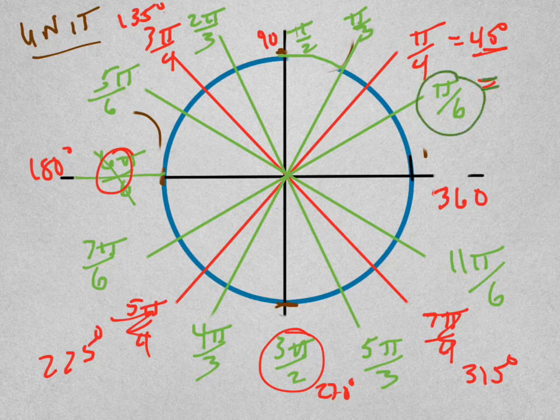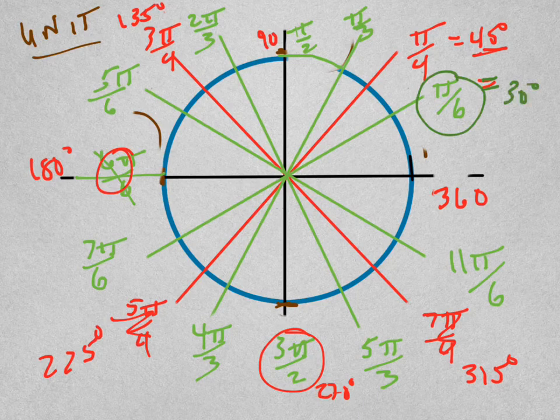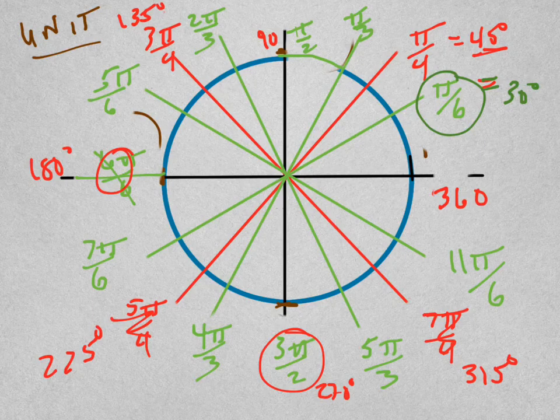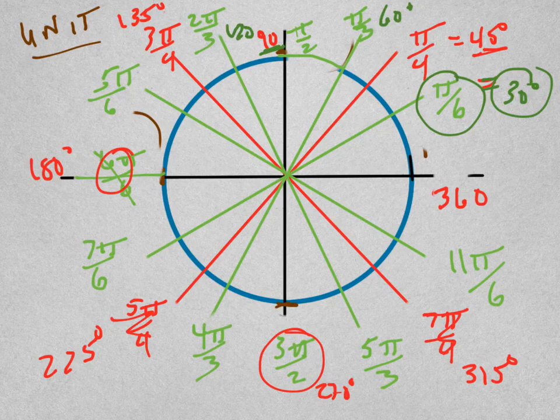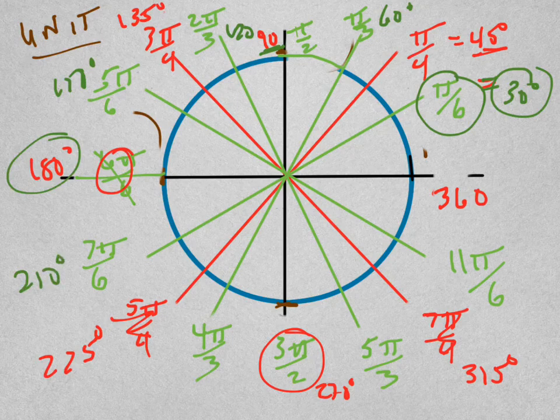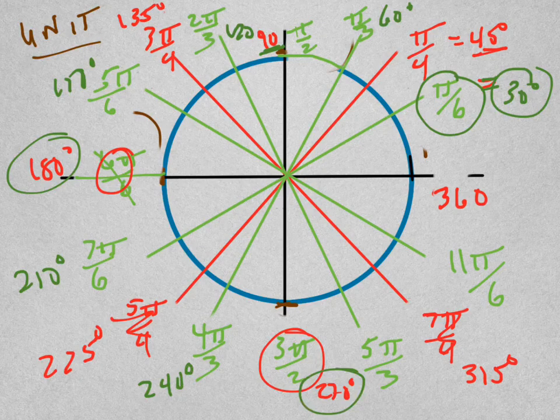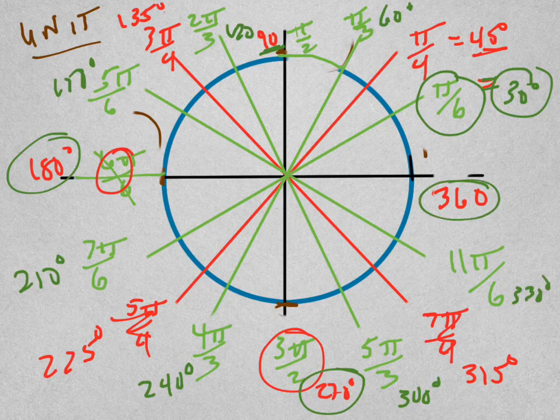Pi over six is equal to thirty degrees, because it's one-sixth of pi. One-sixth of one-eighty is thirty. So add thirty: sixty, ninety, one-twenty, one-fifty, one-eighty, two-ten, two-forty, I'm adding thirty every time, two-seventy, three-hundred, three-thirty, three-sixty.